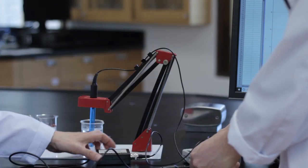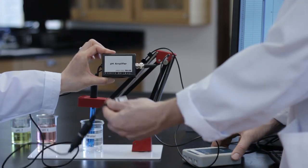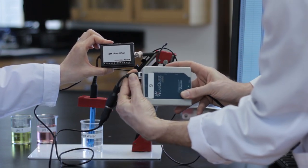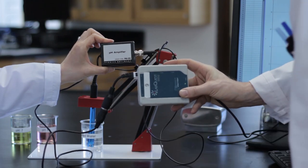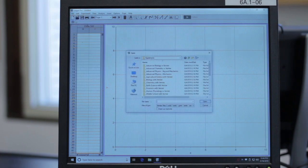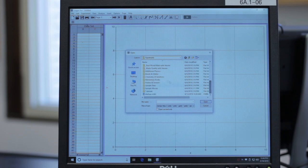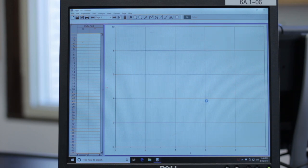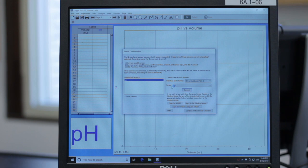You now have to set up LoggerPro. Make sure the pH sensor is attached to the LabQuest Mini interface with the green LED light on. Open the LoggerPro program and select the desired file for the experiment. If prompted, make sure the selected sensor is pH and click connect.